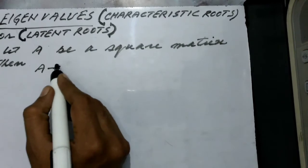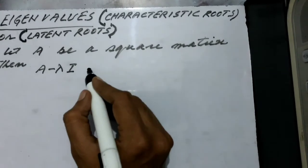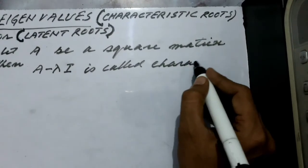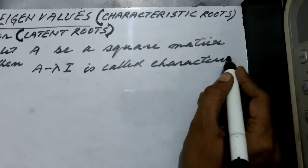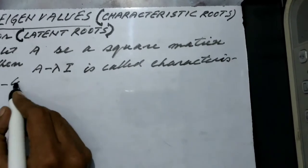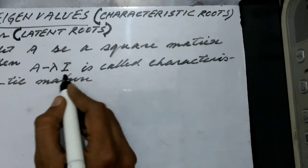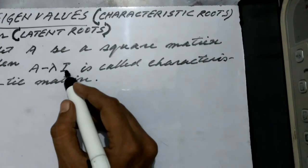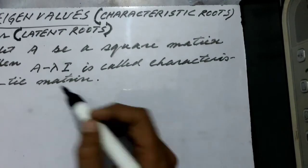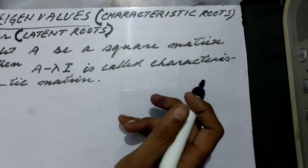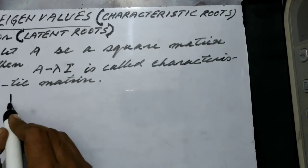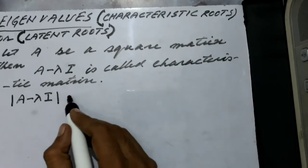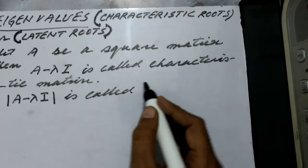A minus lambda I is called the characteristic matrix, where lambda is a scalar (constant) and I is an identity matrix of the same order as A. The determinant of this characteristic matrix is called the characteristic polynomial.